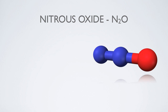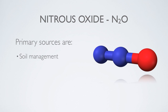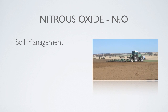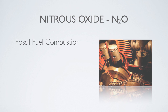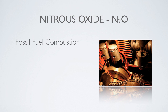The primary sources of nitrous oxide emissions are agricultural soil management, fossil fuel combustion, and the production of fertilizers. Soil management is by far the largest of these sources. Nitrous oxide is released when the soil is tilled, and these natural emissions are increased through the use of fertilizers. As for fossil fuel combustion, the volume of nitrous oxide emitted depends on the fuel type, combustion system, and pollution control devices used.